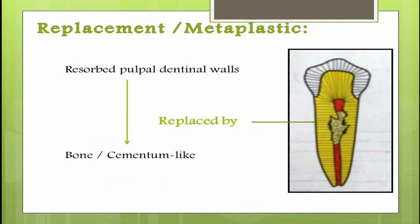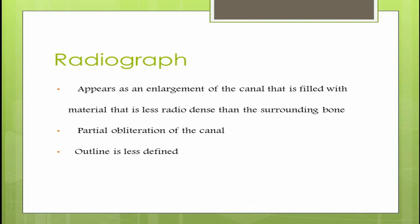Next is the replacement or metaplastic variety, which is usually due to a mild low-grade inflammation like an irreversible chronic inflammation of the pulp or a weak injury. Here the resorbed dentine is replaced by bone or a cementum-like material, and these metaplastic tissues are termed reparative cementum or osteodentine-like material. In radiograph it appears as an enlargement of the canal filled with material that is less radiodense than the surrounding bone, causing a partial obliteration of the root canal.